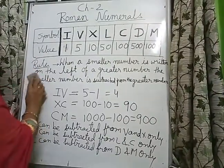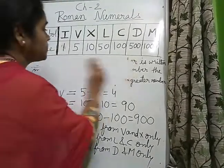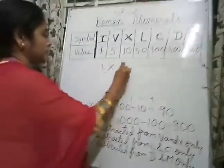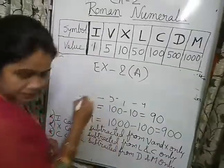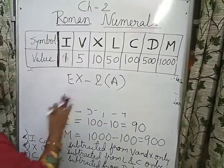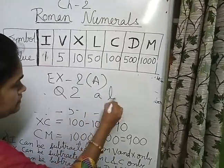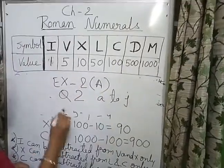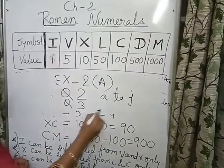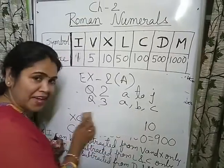Based on these two rules I am giving you questions for homework. Note it down. Exercise 2A: Question number 2, parts A to J. And question number 3 — parts A, B, and C. I think you can do these. That's all for today. Thank you.